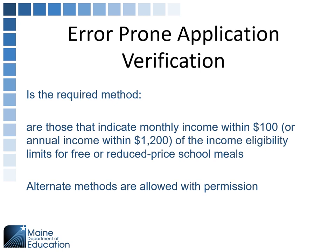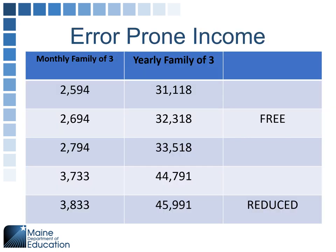What is an error prone application? It is an income-approved application where the monthly income shown is within $100 of the monthly income guideline, or within $1,200 of the annual income guideline. If either one of these is met, that application is considered error prone. If you wish to complete an alternate method of verification, permission must be requested from David Hartley. You'll have to email him — he won't give you an answer over the phone.